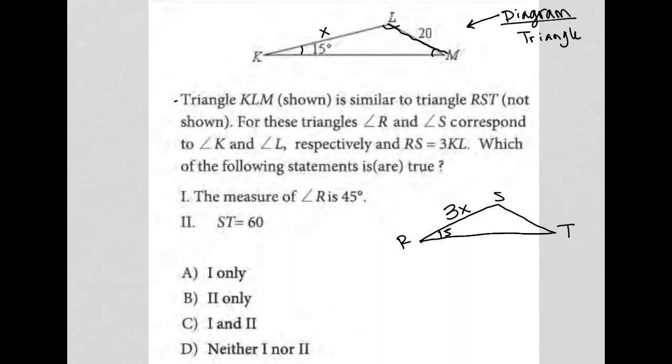Which of the following statements is or are true? So I kind of went too fast. What does it mean that RS is 3 times KL? That means for a similar triangle, that means that all of the corresponding sides are 3 times. All of the corresponding sides in triangle RST are 3 times longer than their corresponding side in KLM. So yes, if KL is X, that makes RS equal to 3X. But also, if LM is 20, that makes ST equal to 60.